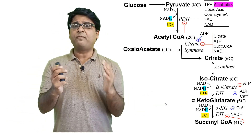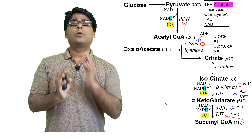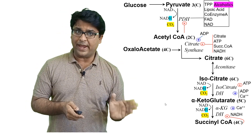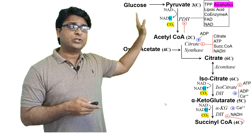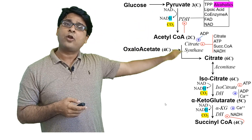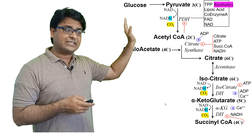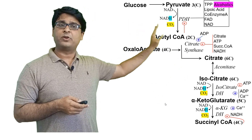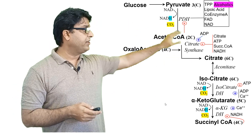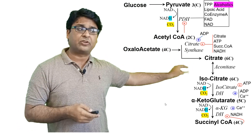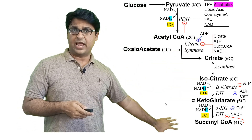So far: in glycolysis you converted glucose into two molecules of pyruvate. From pyruvate you got acetyl-CoA, and from there on everything happens inside the mitochondria. Acetyl-CoA combines with oxaloacetate to form citrate, which is converted to isocitrate, then to alpha-ketoglutarate, then to succinyl-CoA.